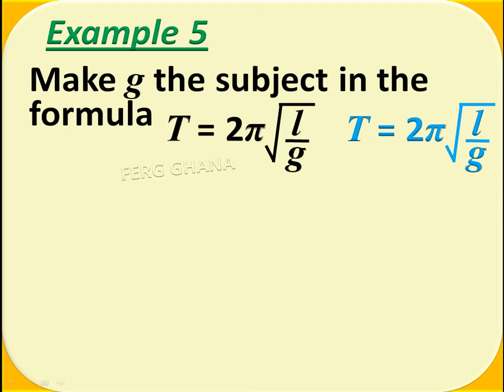By the law of inverse, we have to multiply both sides by 2π, and since 2π is multiplying, it has to divide the T now. So we have T/2π = √(l/g).